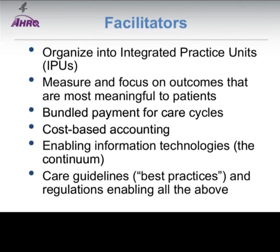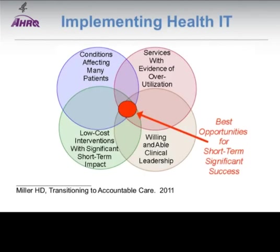A 2001 manuscript on transitioning to accountable care summarizes much of what we've learned about implementing health IT. Starting with services with evidence of over-utilization — a good example is ED use for minor acute problems — and proceeding to conditions affecting many patients, common acute illness affects every child and every family at least several times each year.